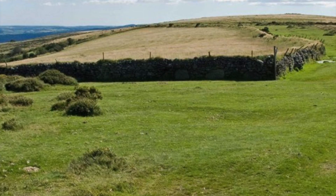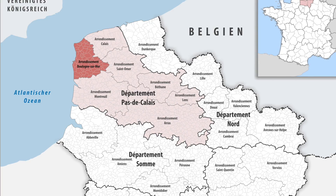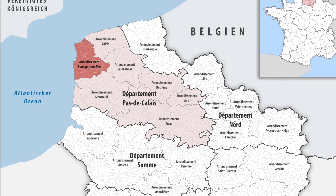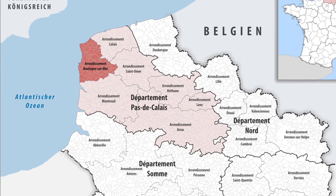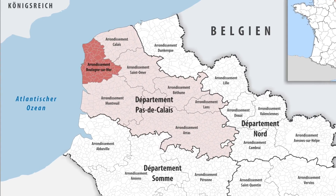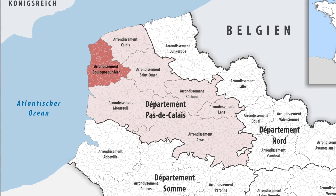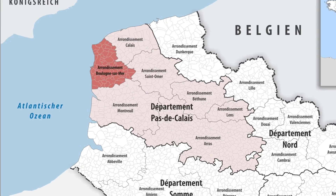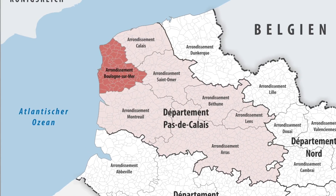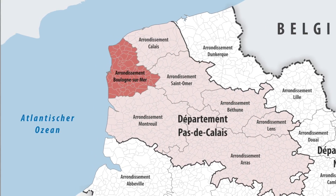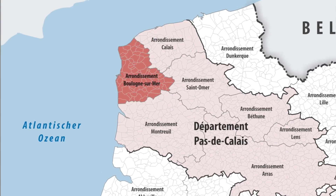Seeing as the government also had no money, Boulogne was sold back to France for £133,333. This could be seen as a success because they received money for it; however, it was way undervalued and wasn't really that much compared to what it could be worth.